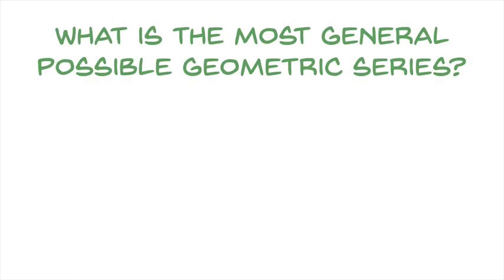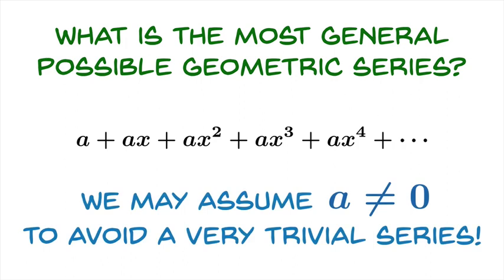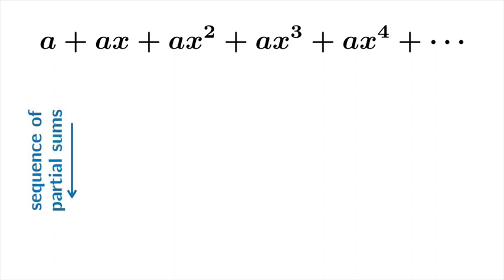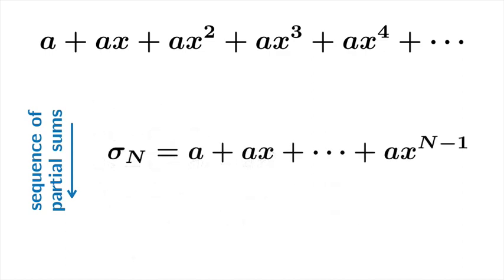The question here is: what is the most general possible geometric series? Well, it's not much more general than what we were looking at in the previous video. You start with any term a, and then to be geometric you have to multiply by the same common ratio, which we'll call x, to get the remaining terms. We're going to assume that a is not equal to zero, because that would be a rather silly series — zero plus zero plus zero, etc. So here's our general geometric series, and let's consider the sequence of partial sums. The nth partial sum will be the sum of all the terms up until ax to the n minus 1.